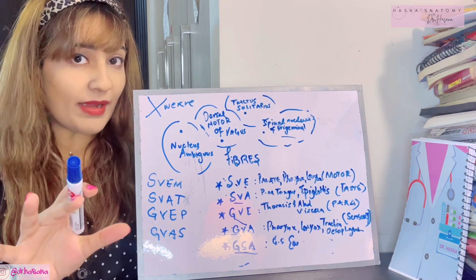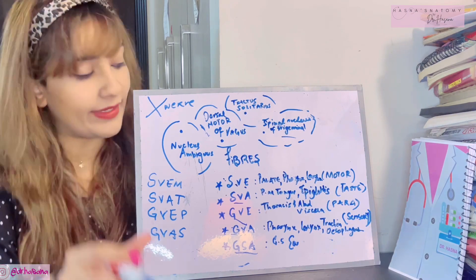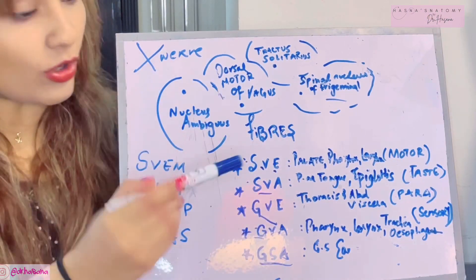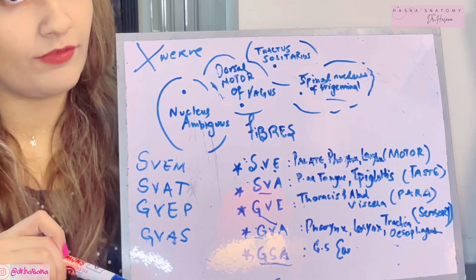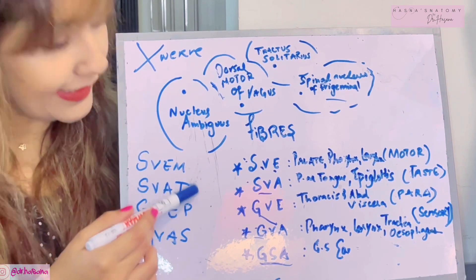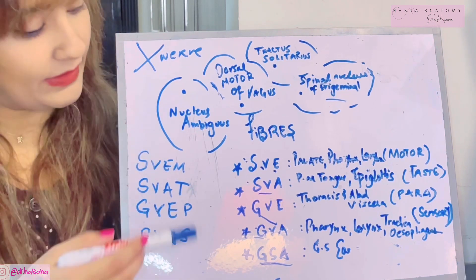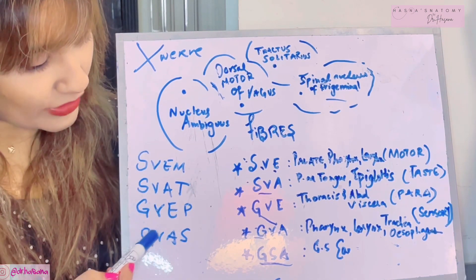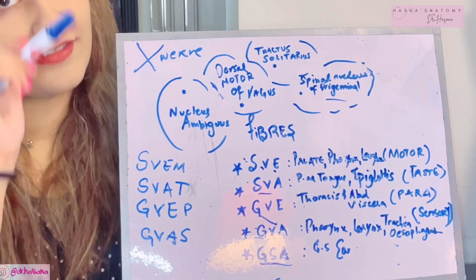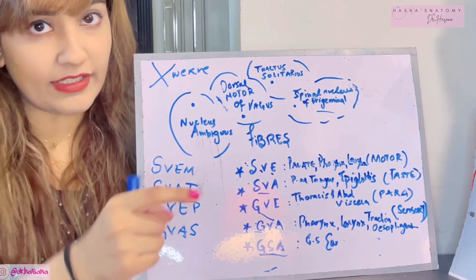These mnemonics represent the basic fibers or functional components of the vagus nerve. Special Visceral Efferents — SWIM — are always the motor fibers. Special Visceral Afferents — SWAT — are always the taste fibers. General Visceral Efferents — GUEP — are always the parasympathetic fibers. General Visceral Afferents — GUAS — are always the sensory fibers. Taking a signal from the CNS to the periphery is efferent; from the periphery to the CNS is afferent.